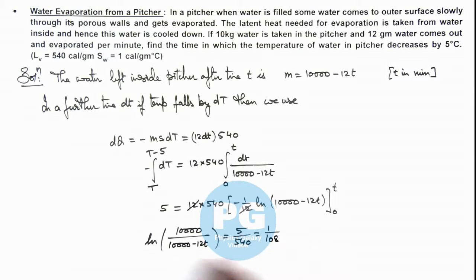Or simplifying it further this gives us the value of time which is 10,000 divided by 12 multiplied by e to power 1 by 108 minus 1. Numerically solving this it will give us 7.737 minutes and that is the result of this problem.